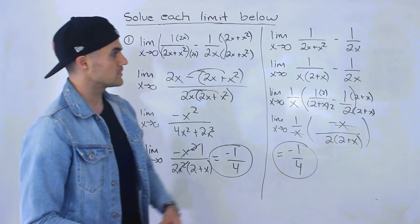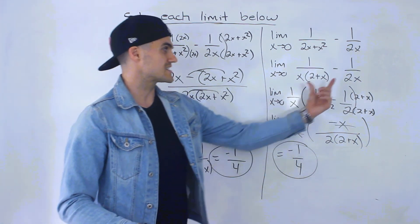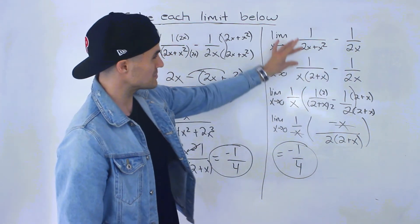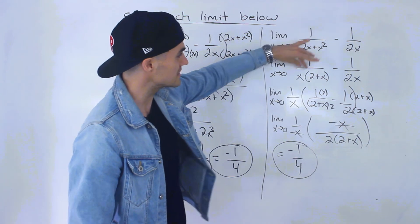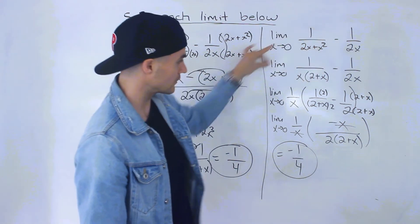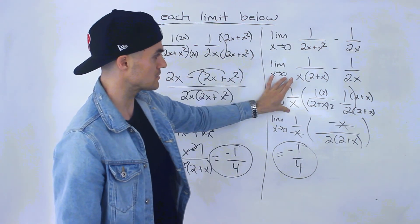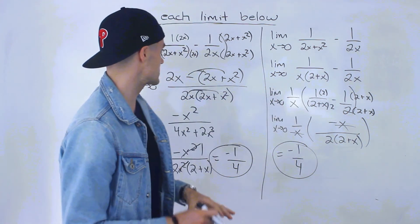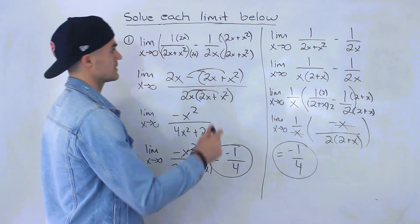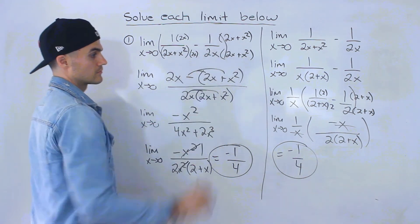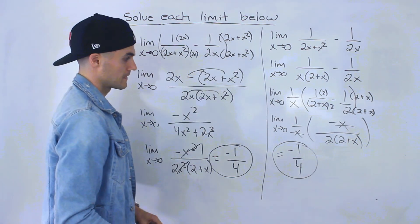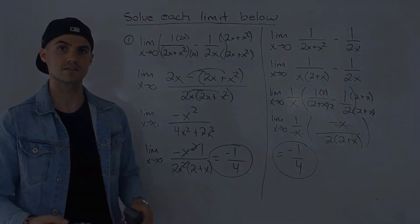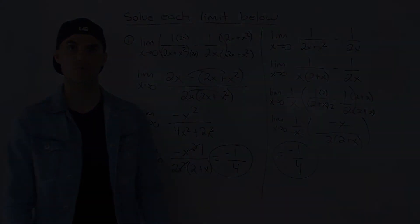That's a little less intuitive — it's tougher to see that you can factor out one over x, especially since you first factor from the denominator and then from both terms. But simplifying that way ends up being easier. Either way, whichever method you choose, the answer is negative 1 over 4.